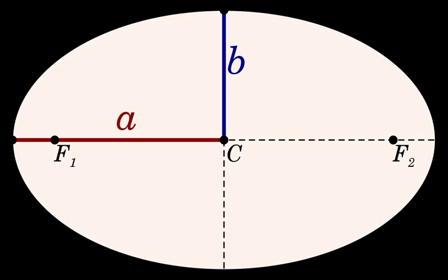The time-averaged value of the reciprocal of the radius, r⁻¹, is a⁻¹(1 − e²)⁻¹.